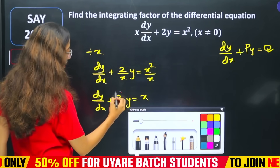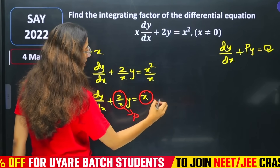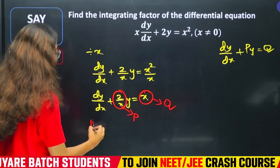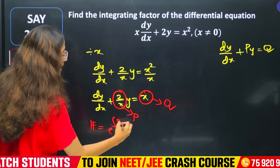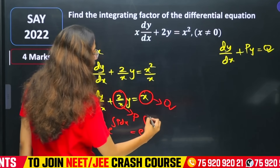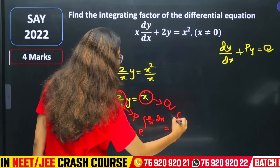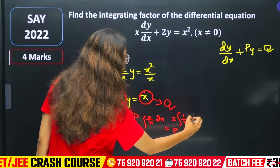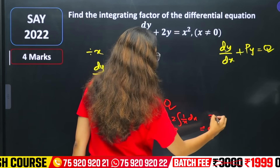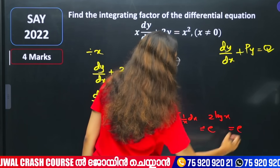Now the integrating factor equals e raised to ∫P dx = e raised to ∫(2/x) dx = e raised to 2·∫(1/x) dx = e raised to 2·log x.